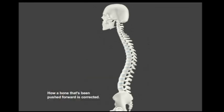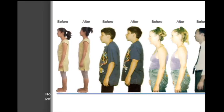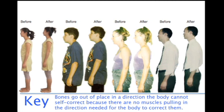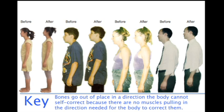Number one: the key to what happens with bodies is bones go out of place in a direction the body can't self-correct because there are no muscles pulling in the direction needed to correct them. And if your doctor, physical therapist, chiropractor, osteopath, voodoo doctor, Rolfer — any of those people — if they are actually correcting your structure, when they say breathe in, breathe out, relax, and let your body slump, your body will stay upright all by itself.